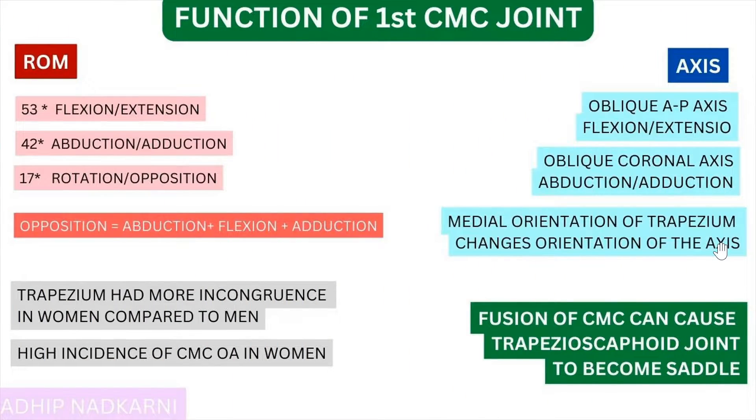So to summarize the structure: we covered the CMC joint articulation. Now let's look at movement in more detail. Since we understand how articulation happens, we can understand the axis and range of movement. There is 53 degrees of flexion and extension, 42 degrees of abduction and adduction, and 17 degrees of rotation and opposition.